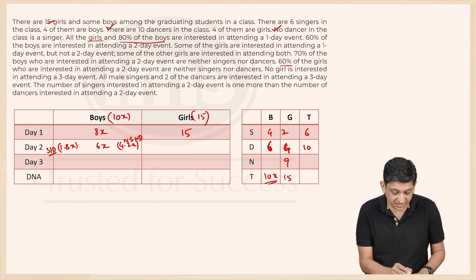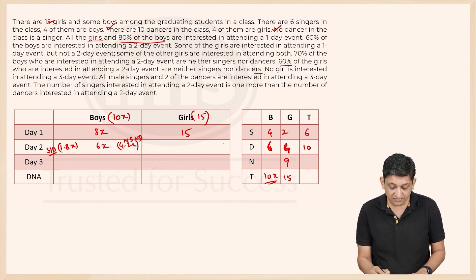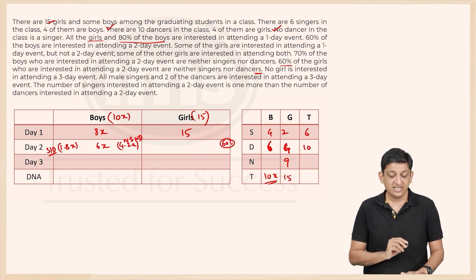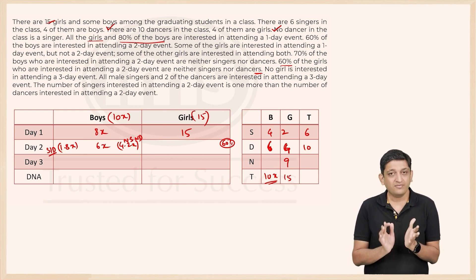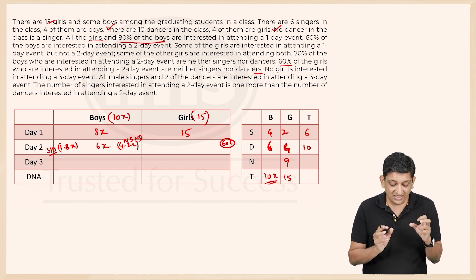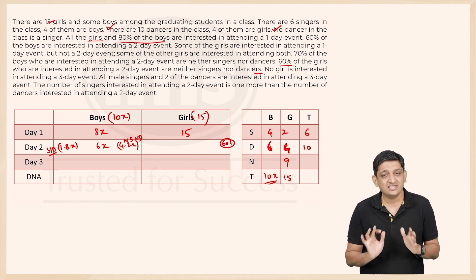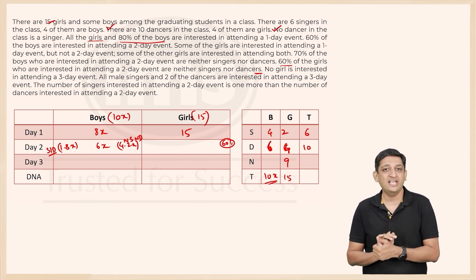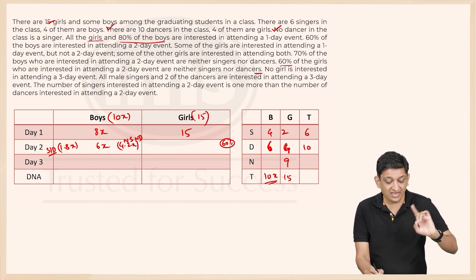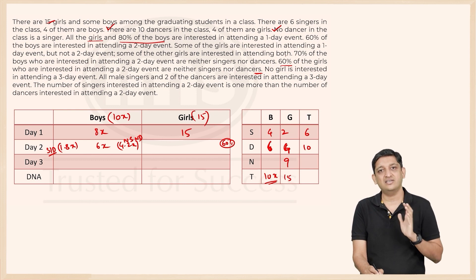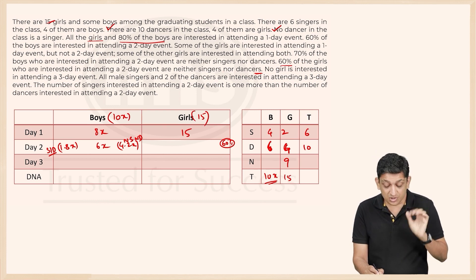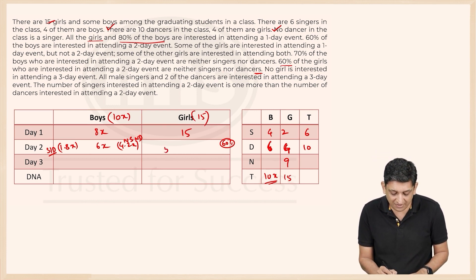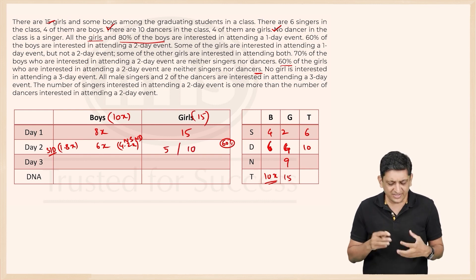60 percent of the girls interested in the two-day event are neither singers nor dancers. Since 60 percent of something must yield an integer, the number of girls interested in the two-day event is restricted. It can either be 5 or 10 — any other number, like 8, would give a non-integer result of 4.8, which is not valid.